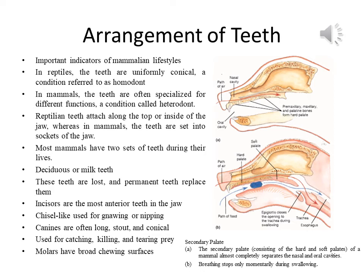In reptiles, the teeth are uniformly conical, a condition referred to as homodont. In mammals, the teeth are often specialized for different functions, a condition called heterodont. When teeth perform special and different functions they are known as heterodont; when they perform a uniform or single function, it is known as homodont.